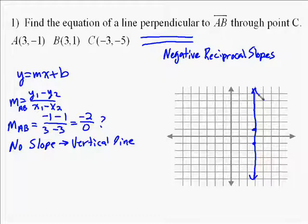And so what would a perpendicular line to AB be? Well, let's look at C. So we're going to go in and plot C. And then if you think about perpendicular as 90 degrees, well, it would be a horizontal line.